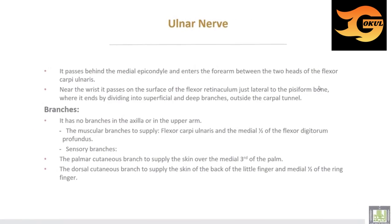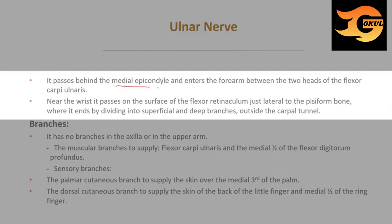The ulnar nerve passes behind the medial epicondyle and enters the forearm between the two heads of flexor carpi ulnaris. Near the wrist it passes on the surface of the flexor retinaculum just lateral to the pisiform bone, where it ends by dividing into superficial and deep branches, passing outside the carpal tunnel.